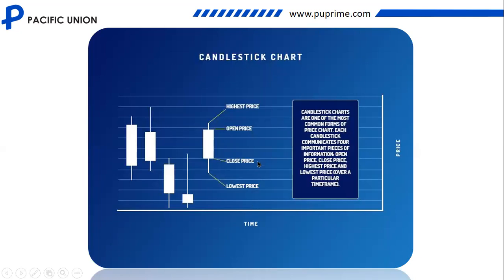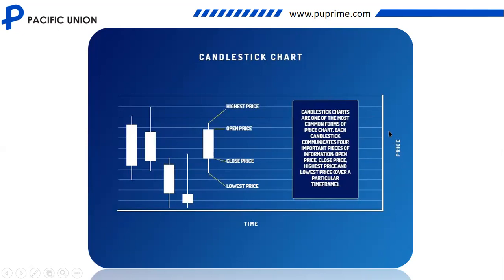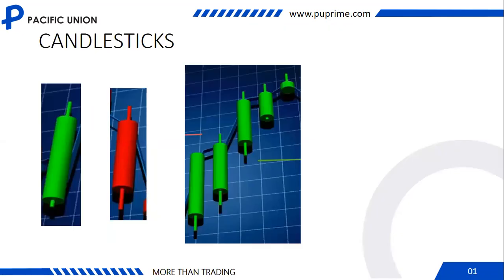This is the anatomy of the candlestick chart. We have the highest price, the open price, the close price, and the lowest price. The market is plotted with price against time. Candlestick charts are one of the most common forms of price charts — each candlestick communicates four important pieces of price information. There are four things that are very important in trading with candlesticks: it gives you the open price, the close price, the highest price, and the lowest price over a particular time frame.